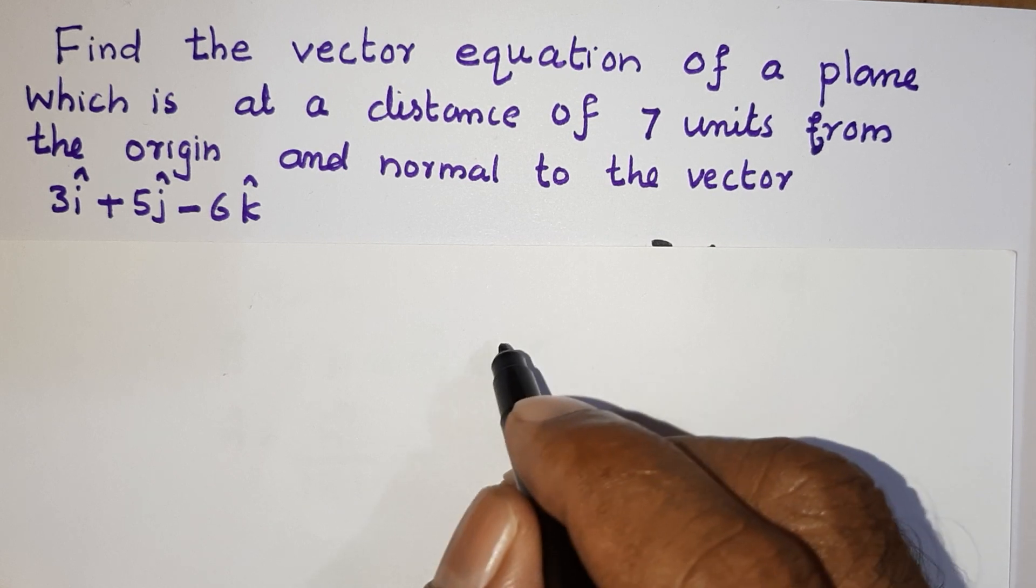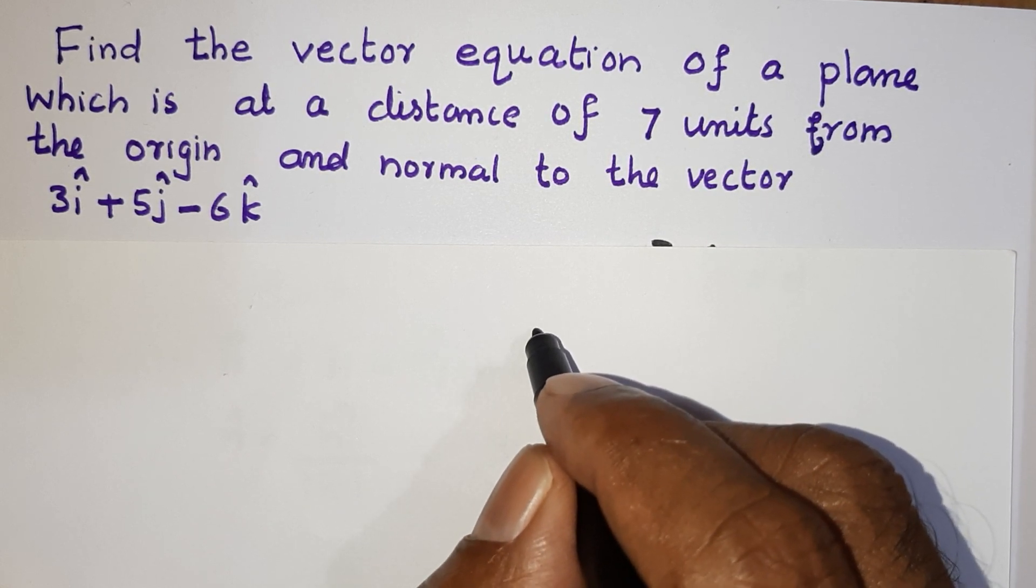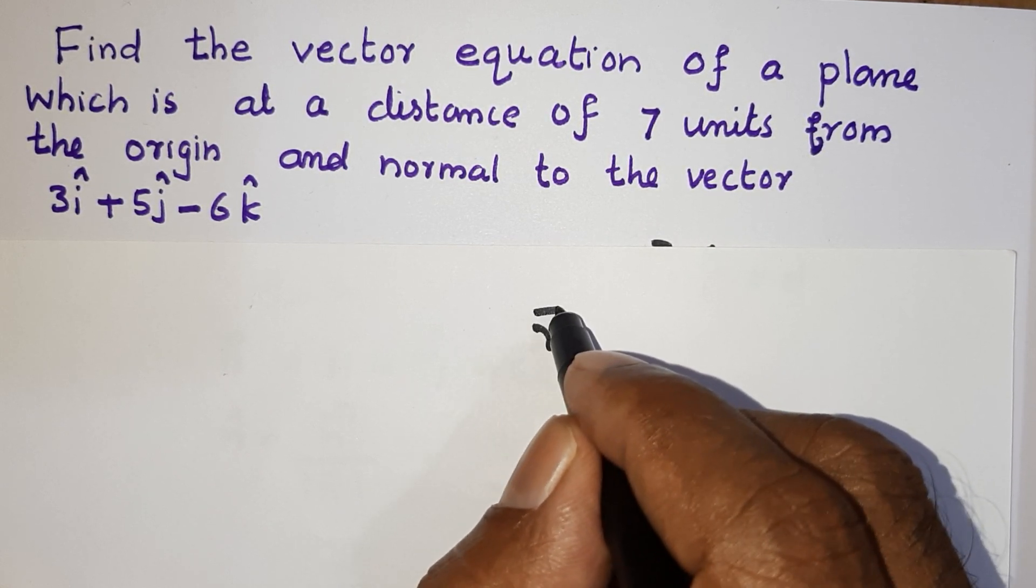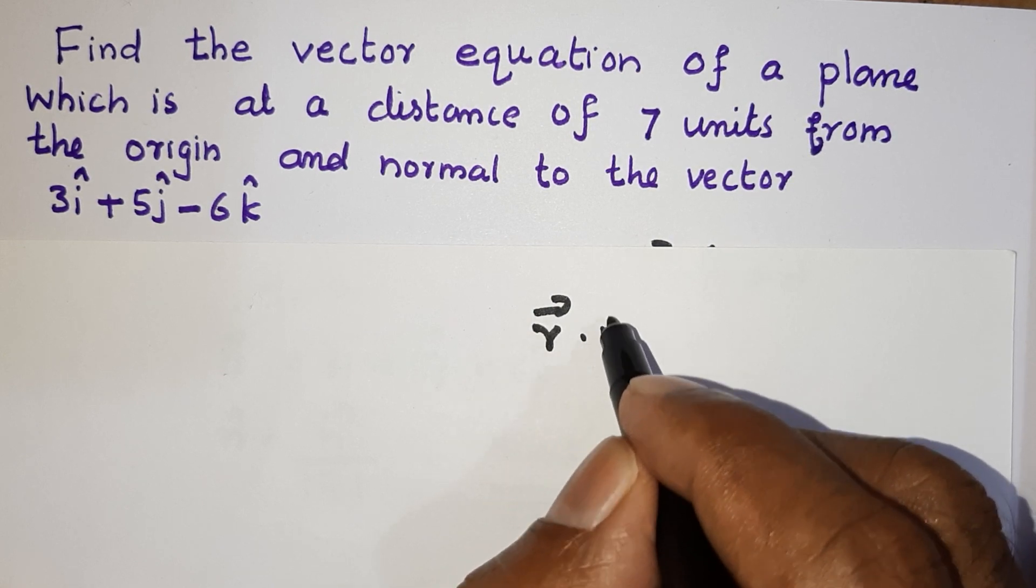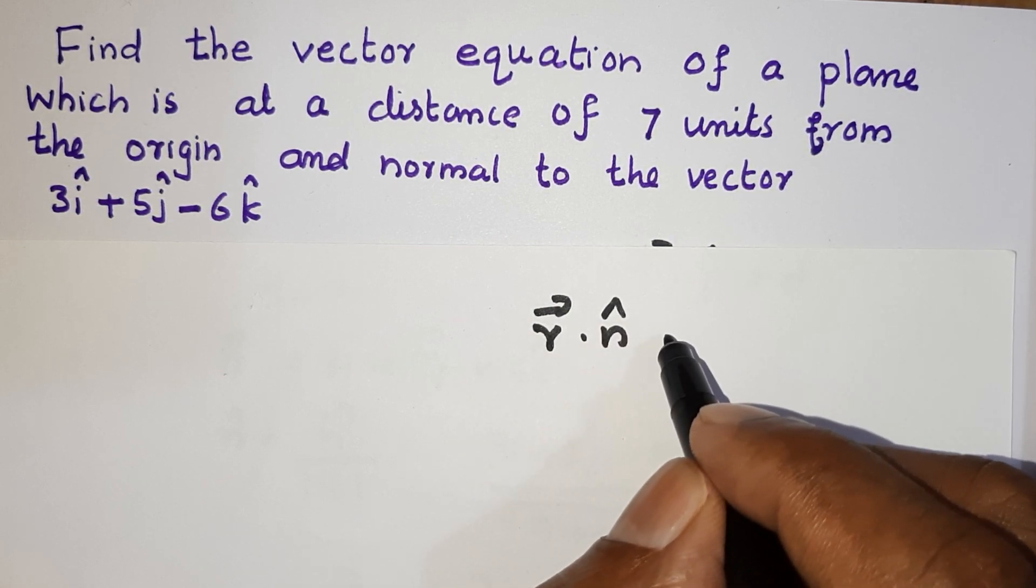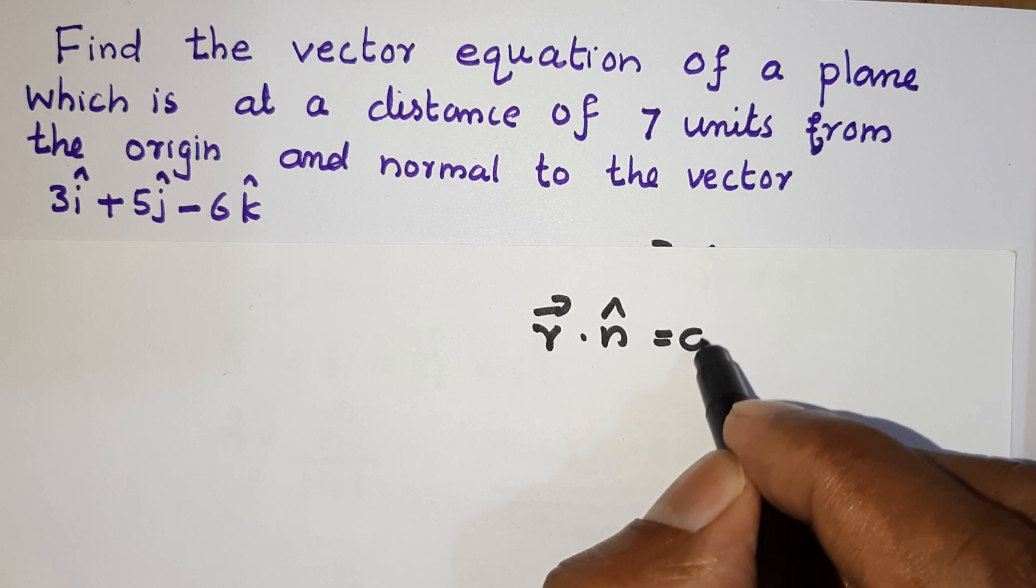Vector equation. What is vector equation? The plane vector equation is vector r dot unit vector n hat equals d. This is the vector equation.